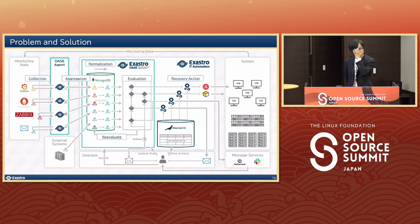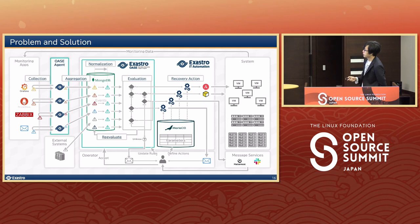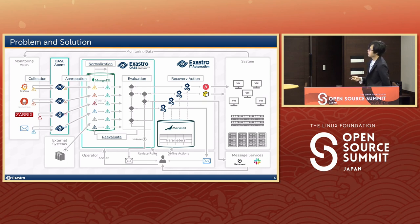That is our idea of how we can combine different open source software to solve mundane system operations. For example, say the system is low on storage. The monitoring apps will see that and make an alert. The Oase agent will pick that up, put it in the database, and unify the alerts so they are all labeled the same. Then, if the user has written a rule that says 'if low on storage, delete cache data,' Exastro Oase will see that the message matches the rule and send the action to Exastro IT Automation, which will then send it to Ansible or OpenTofu, which will execute the action and delete the cache data on the system.